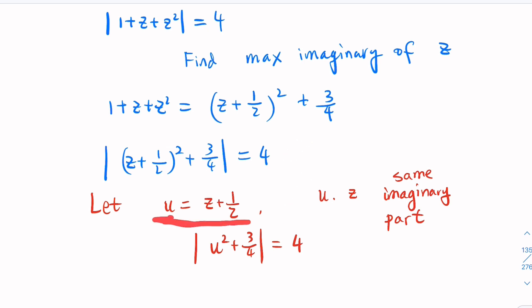And by change of variable, the u has the same imaginary part. If we can find the maximum imaginary part of u, then we know that we find the answer to the original question. But this is easier to work with.